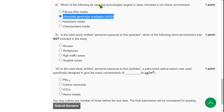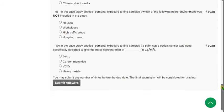In the case study entitled 'Personal Exposure to Fine Particles,' which of the following microenvironment was not included? We know what are the included ones: houses, workplaces, high traffic areas, and the other one is industrialized areas maybe. But they have given hospital zones. This is not included in the case study. So answer is fourth option.